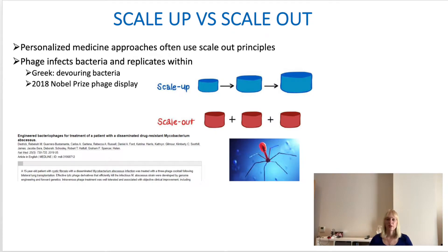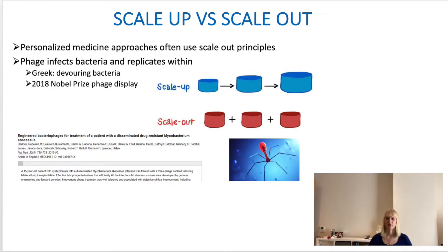First of all, the difference between scale up and scale out. You're probably used to from standard chemical engineering wanting to go bigger and bigger because you end up saving a lot of costs. Bioreactors are a little bit different because of the concept of precision medicine, which means you tailor the therapy to the individual patient. Think of gene therapy and other therapies specifically tailored towards the patient.